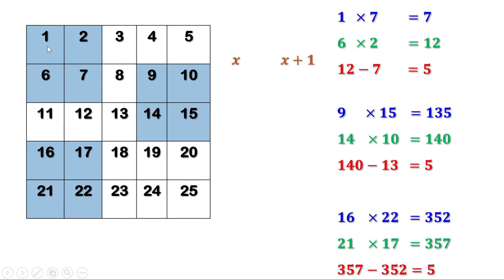Now what about the third number? 1 plus 5 is 6, 9 plus 5 is 14, 16 plus 5 is 21. Therefore, the third number is 5 more than the first number, so if x is the first number, the third number is x plus 5. For the fourth number: 1 plus 6 is 7, 9 plus 6 is 15, 16 plus 6 is 22. Therefore, the fourth number is 6 more than the first number, that is x plus 6.